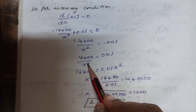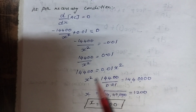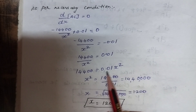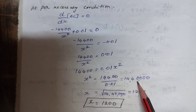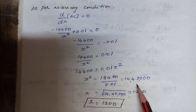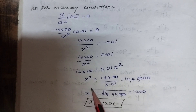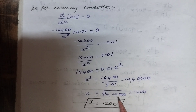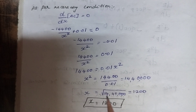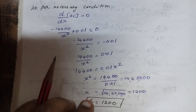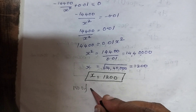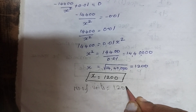From −14,400/x² + 0.01 = 0, we get 14,400/x² = 0.01. Cross-multiplying: x² = 14,400 / 0.01 = 1,440,000. Therefore x = 1,200. So the number of units is x = 1,200.